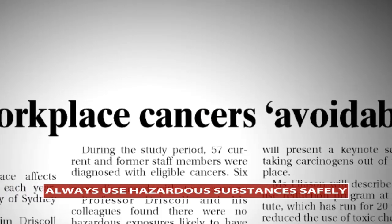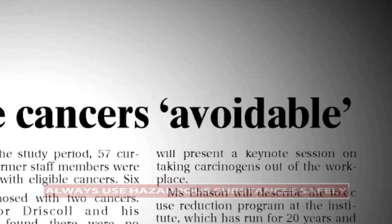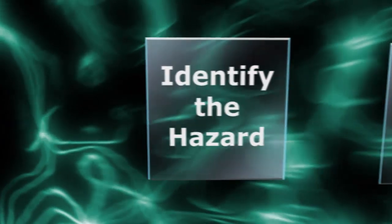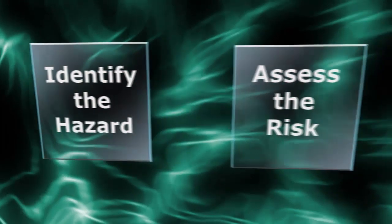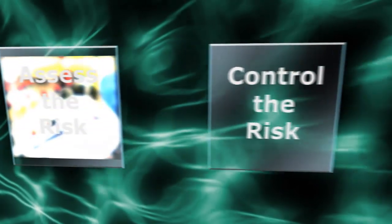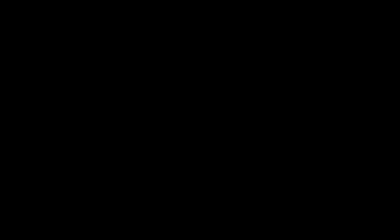Hazardous substances, if not safely used, can cause health effects either immediately or many years into the future. Make sure that workers know about the hazards of the chemicals they use, and that the risks have been assessed and are being properly controlled. If you're not sure if controls are adequate, get advice from an occupational hygienist or from your regulatory authority.